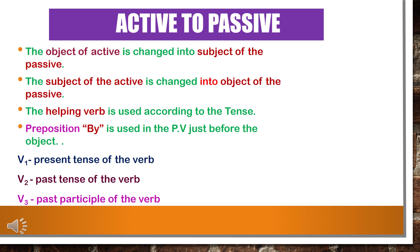Now we will see what is V1, V2 and V3. V1 is the present tense of the verb. V2 is the past tense of the verb. V3 is the past participle of the verb.